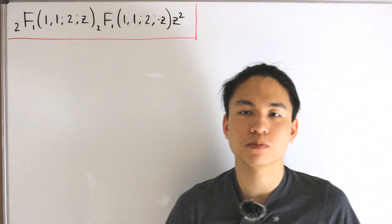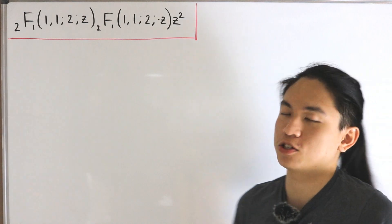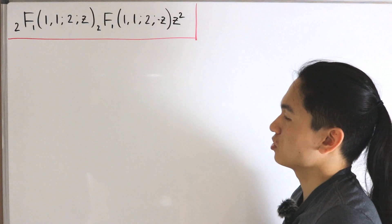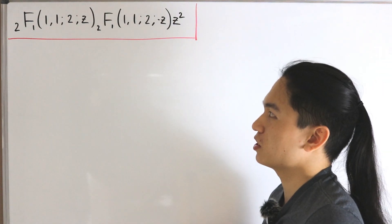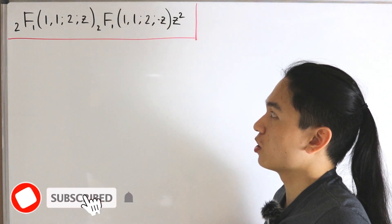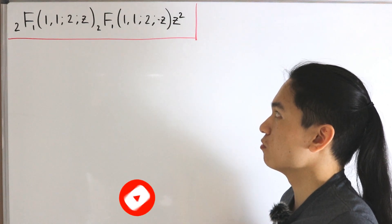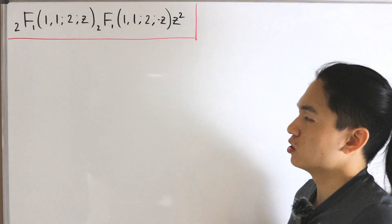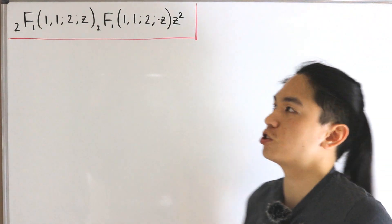Today we have an evaluation we want to compute, and the notation does look weird for first-time viewers appearing on this channel. I'm going to read this as subscript 2 F sub 1 of inputs 1, 1, 2, z — multiplied with subscript 2 F sub 1 of inputs 1, 1, 2 of negative z — multiplied by z squared. This is known as a hypergeometric function, specifically an ordinary hypergeometric function.